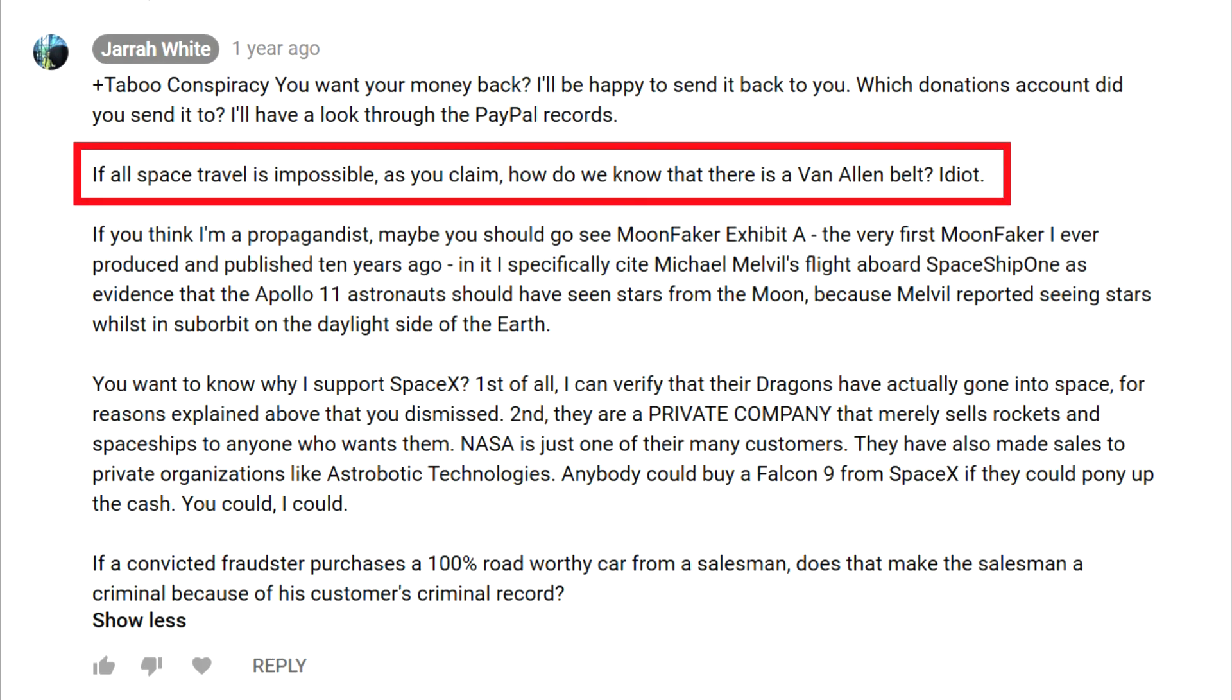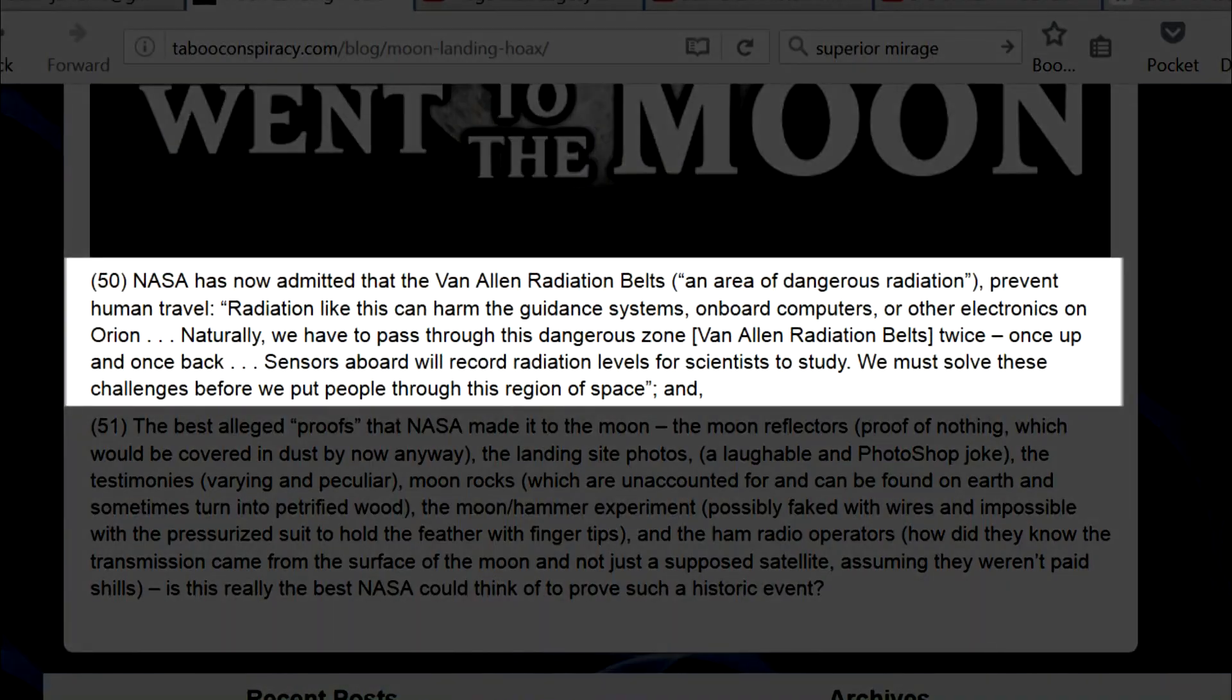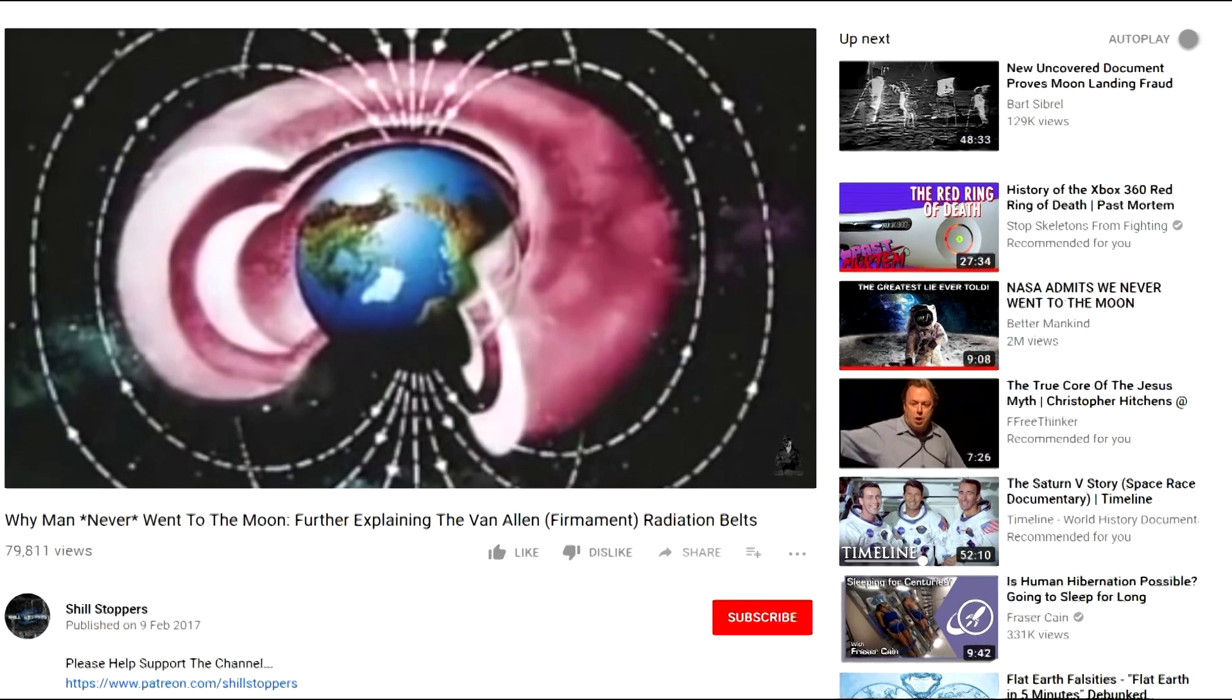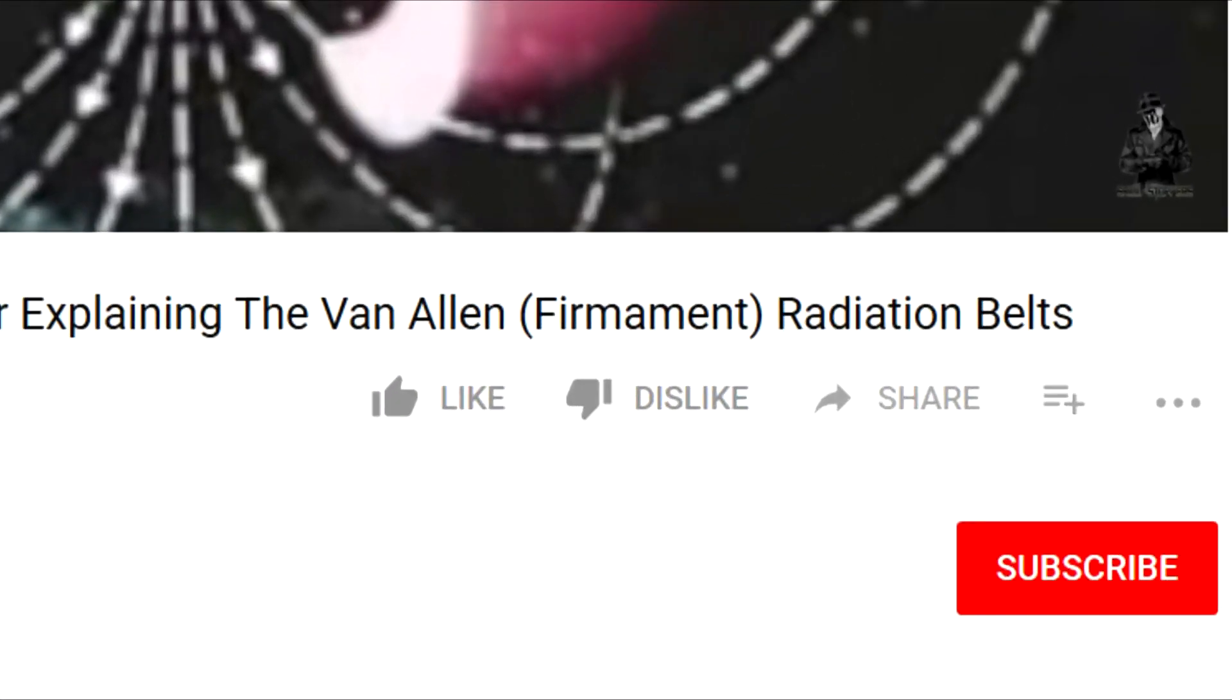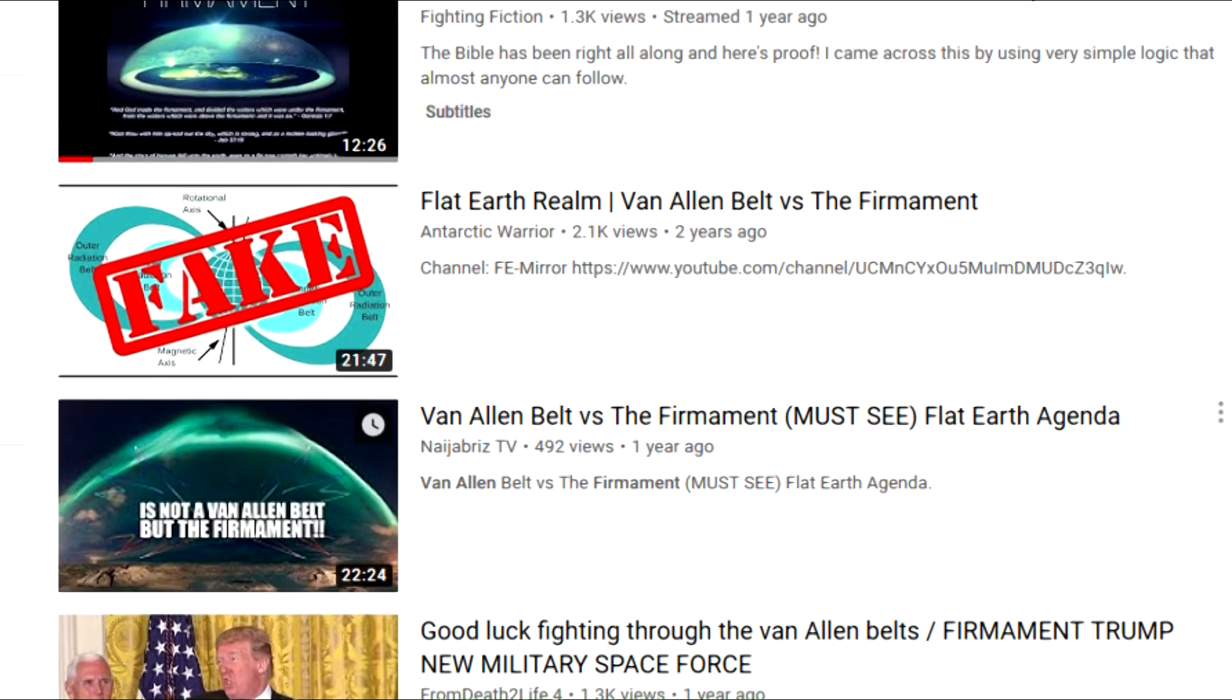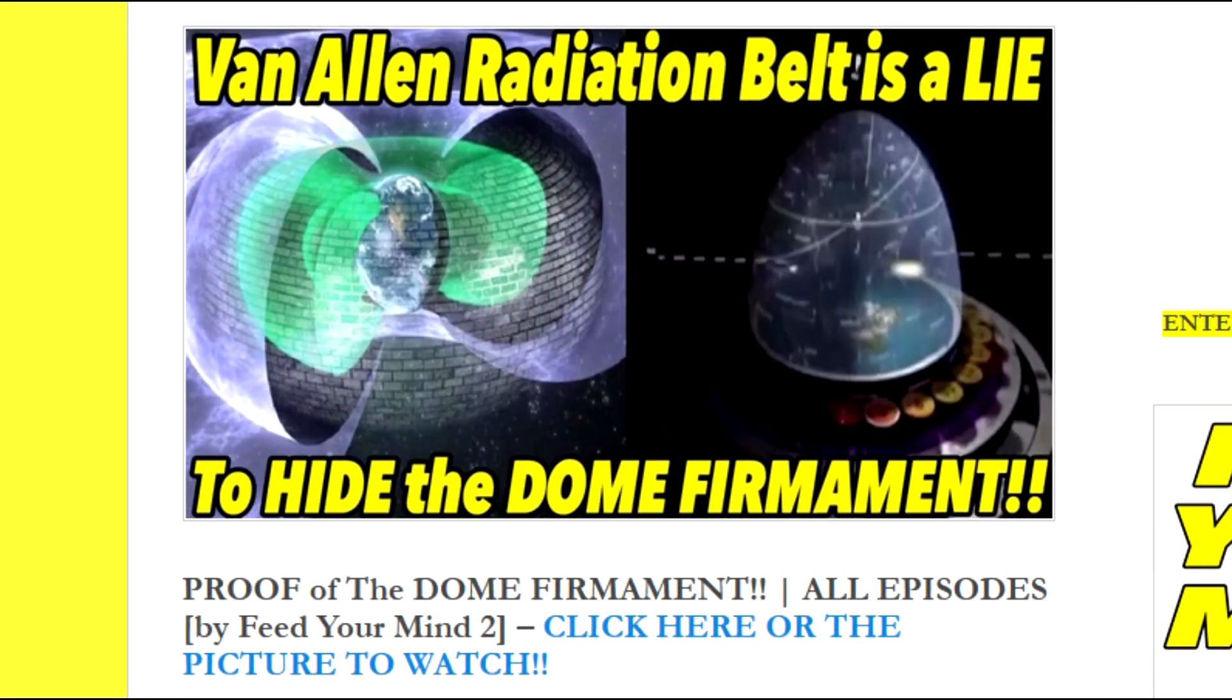When this is pointed out, flat earthers are quick to backpedal or hand wave. Some deny that the belts exist, despite previously citing them as evidence. And others even go so far as to claim that the Van Allen belt is actually the firmament covering their flat earth, whatever that means. This in itself demonstrates that they can't even keep their stories straight, or even produce a working and consistent model of their fantasy world.